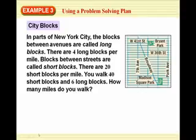Example three, city blocks, using a problem-solving plan. In parts of New York City, the blocks between avenues are called long blocks. There are four long blocks per mile. Blocks between streets are called short blocks. There are 20 short blocks per mile. You walk 40 short blocks and six long blocks. How many miles do you walk?